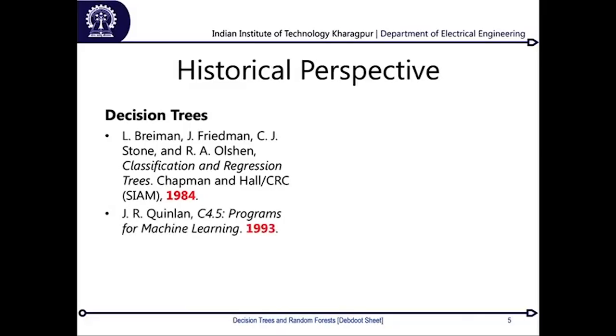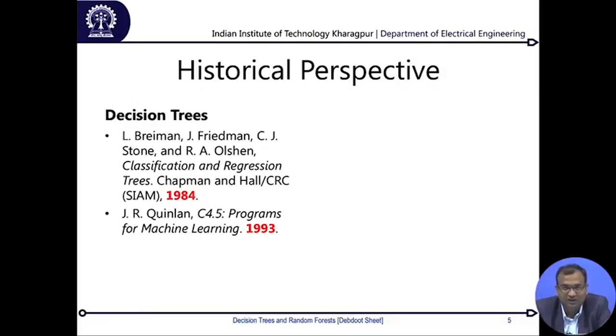Coming to the historical perspectives: decision trees came up with four famous people — Breiman, Friedman, Olshen, and Stone — who wrote a famous book called Classification and Regression Trees, also known by the acronym CART. This work was funded by the US Naval Research Board in the early 1980s and the book came out around 1984. Interestingly, this whole machine learning paradigm was developed for solving medical problems. Today you have clinical decision support systems — things like OncoSyn — where clinicians and even websites let you input symptoms to see whether you have a particular disease.